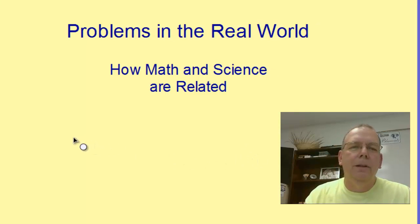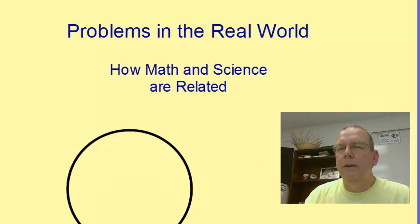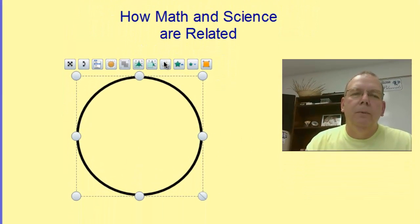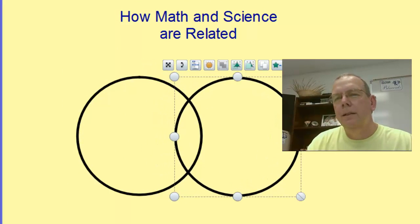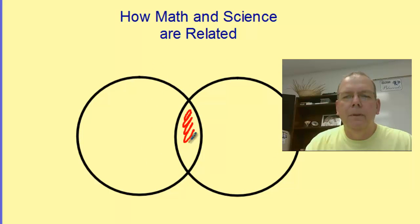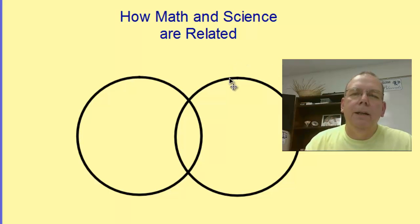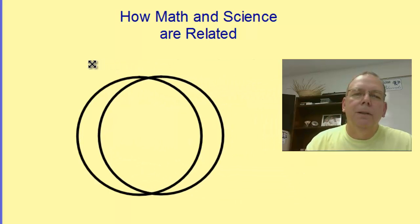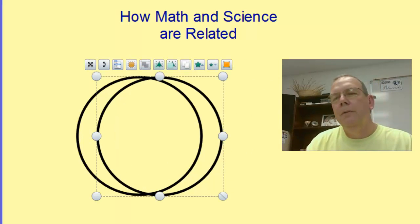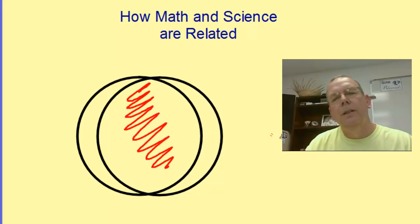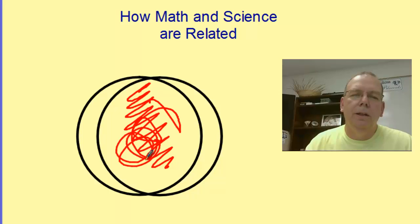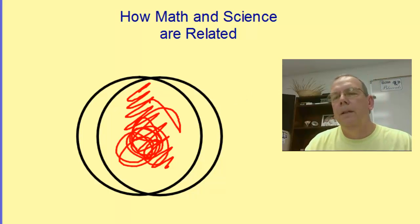One thing that might be fairly informative is to think about a Venn diagram. Typically we think of two circles with some commonality in the middle. But what we're going to find in physics is that the relationship is much more overlapping than that — there's much more that math and physics have in common than not. So there's a huge area in the middle that they share.